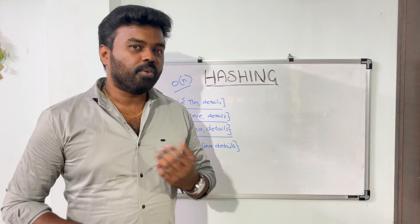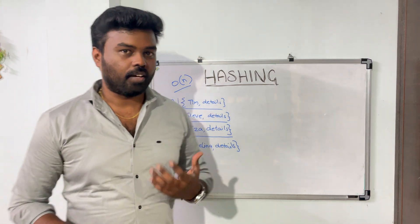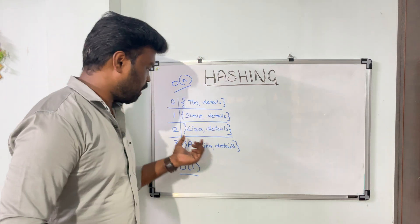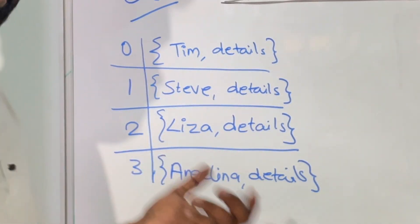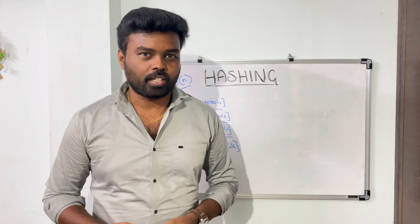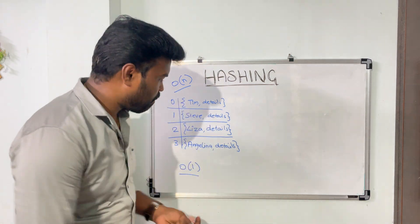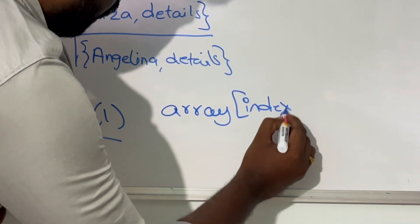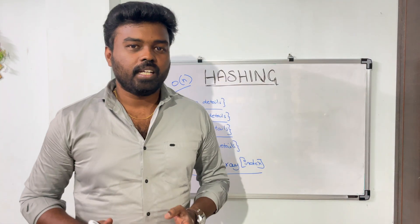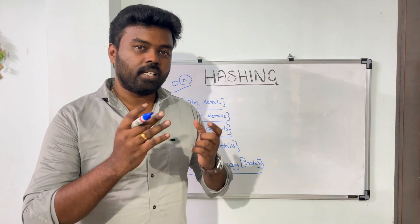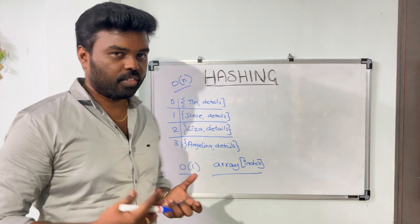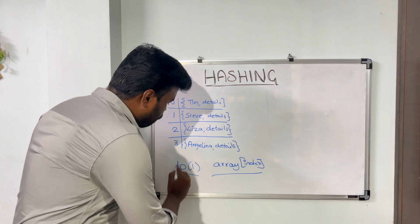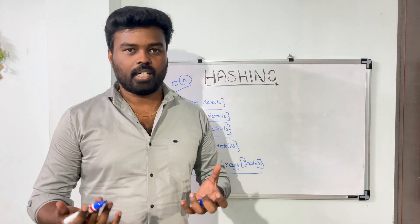Consider if we know the index — the array index of the employee we are looking for. Say for example, if you are looking for the employee Lisa, and we know that Lisa sits at array index 2. If we know that, then we can do something like array[index]. We pass the index into the array and then we get the employee details immediately. There is no need to iterate through the array or compare each employee name with the input. Because we know the index, we can directly do the array indexing, and that gives us O(1) time complexity — which is very efficient and exactly what we are looking for.